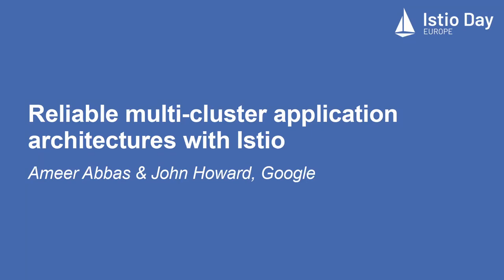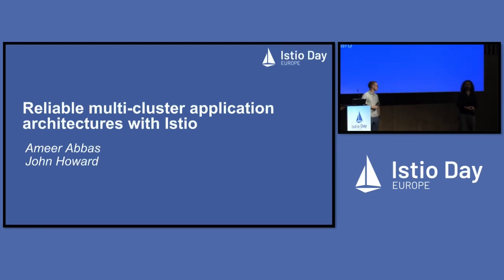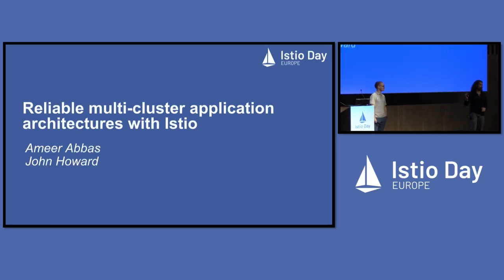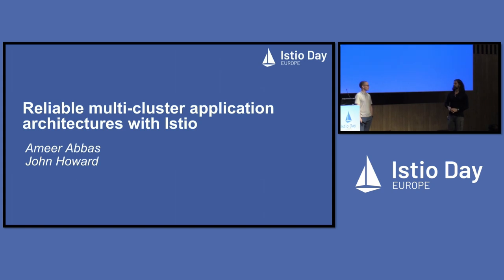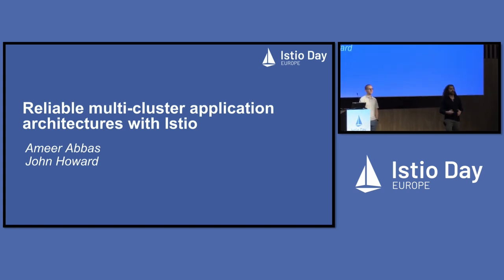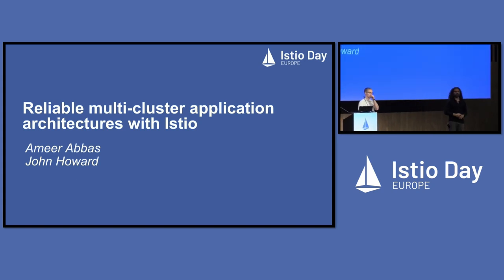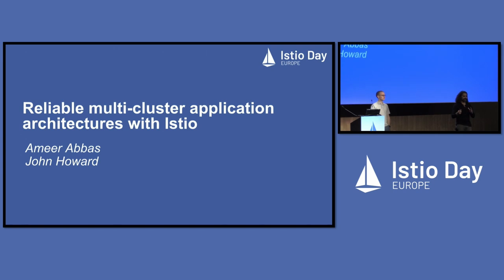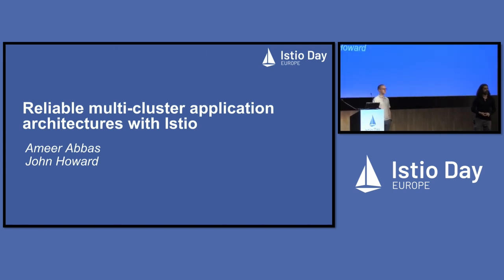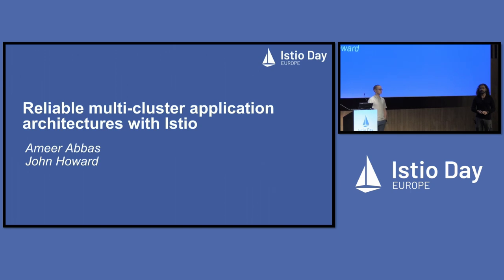Hopefully, everybody had a good lunch. His name is John Howard — he's a software engineer extraordinaire. I think you guys have already talked with him. My name is Amir Abbas. I'm a product manager at Google. Today, we're going to talk about reliability. I did a talk last year in Amsterdam. This is a variant of that. We'll put a little bit more Istio spin and talk about some architecture patterns that we're seeing and some best practices.